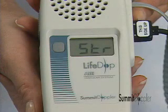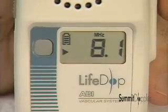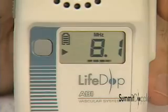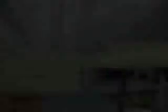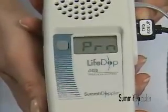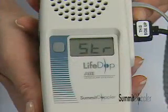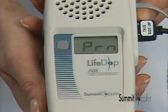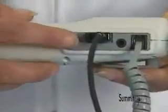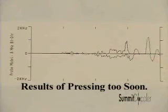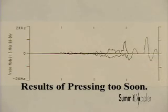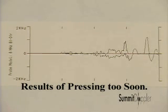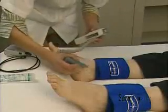Avoid turning the Doppler off before printing a waveform from memory, as stored waveforms are deleted when power is turned off. Only the most recent waveform is retained — the old waveform is overwritten when you press the red print button. When you press the red print button, you're selecting the 4 seconds of waveform prior to pushing the button. The data is sent to the printer immediately if the printer is connected and ready, or stored until the printer is available. The LifeDop's display will show STR when a waveform is stored and PRN while printing. If you press the button before collecting 4 seconds of waveform data, the memory may not be filled. Record the patient and site information on the waveform to prevent confusion later.